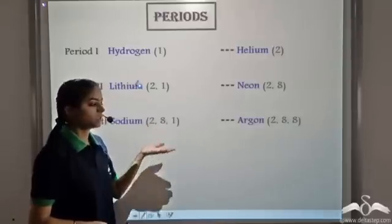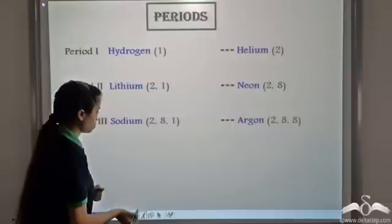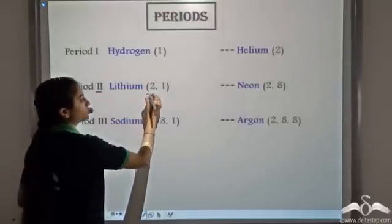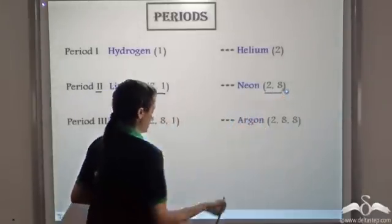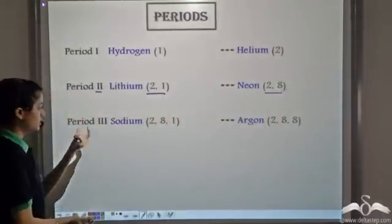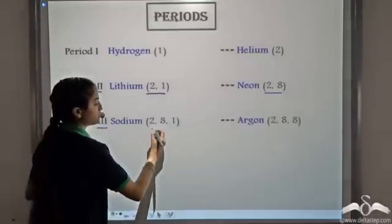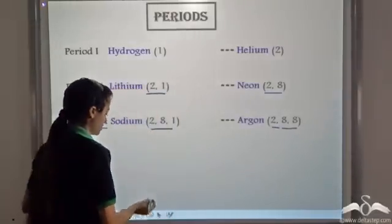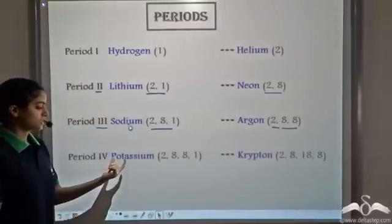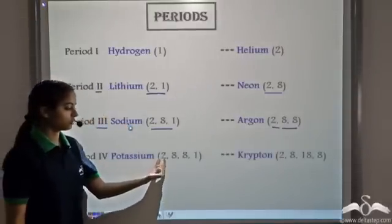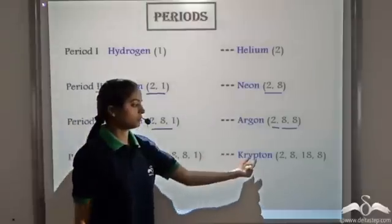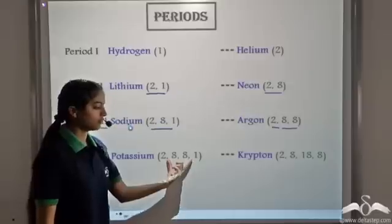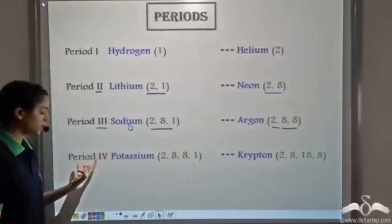Are you able to observe any particular trend? The elements of period 2 have 2 shells, and the elements of period 3 have 3 shells. Observing the 4th period: it starts with potassium, which has electronic configuration 2.8.8.1, and ends with krypton, which has electronic configuration 2.8.18.8 — so the number of shells is 4 for period 4 elements.